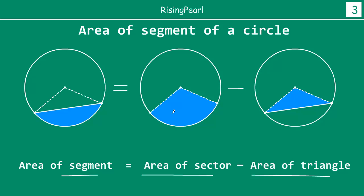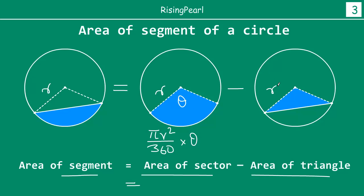We know there is a formula for the sector area. If the angle at the center is theta, from our last webisode, the area of a sector equals pi r squared divided by 360, multiplied by theta, where r is the radius. From this we subtract the area of the triangle.